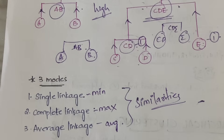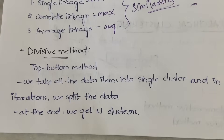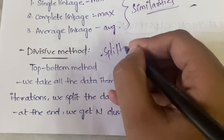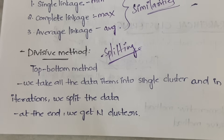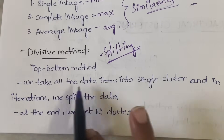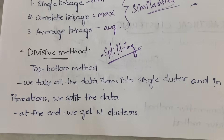In the divisive method, it is a top-to-bottom approach — from the top you come down, meaning you will be splitting the data. In agglomerative, we merge data from bottom to top; in divisive, we split data from top to bottom. We take all data items into a single cluster and in each iteration we split the data.